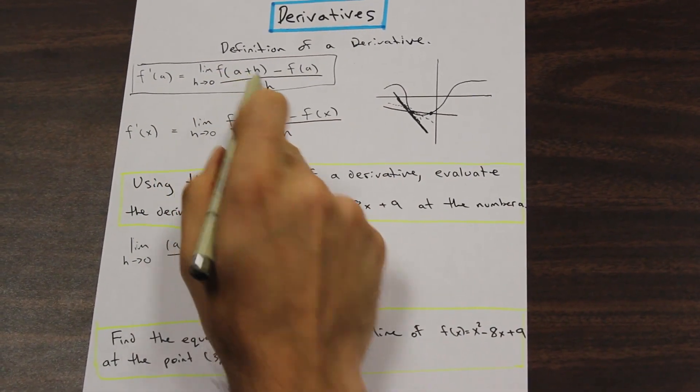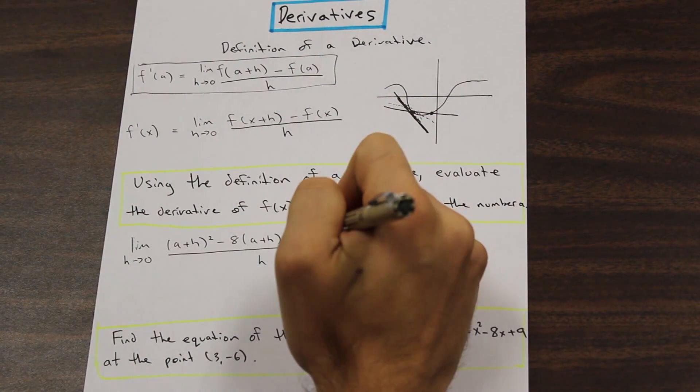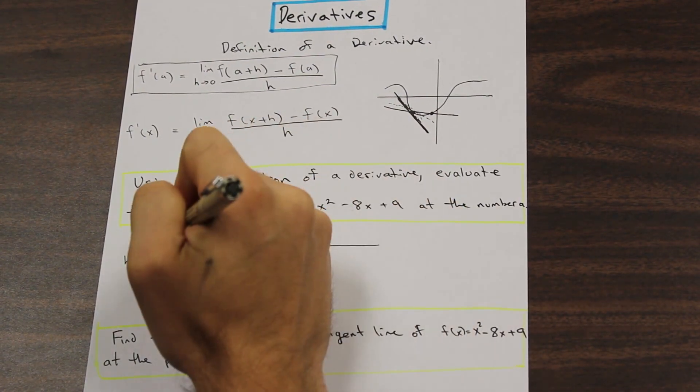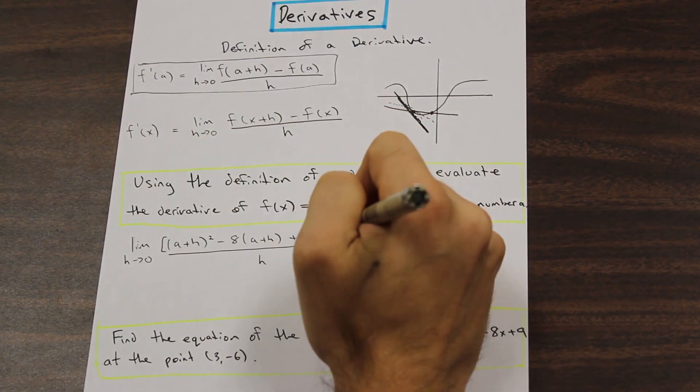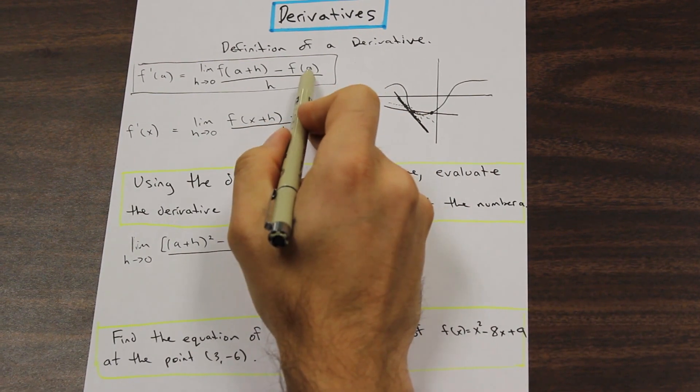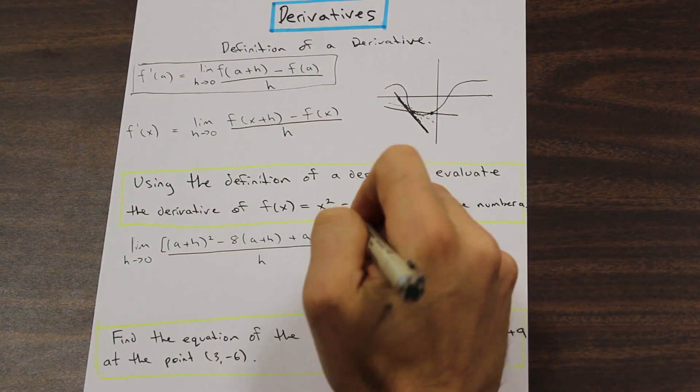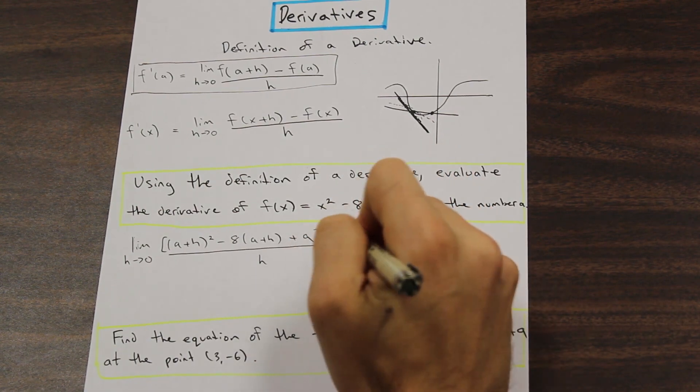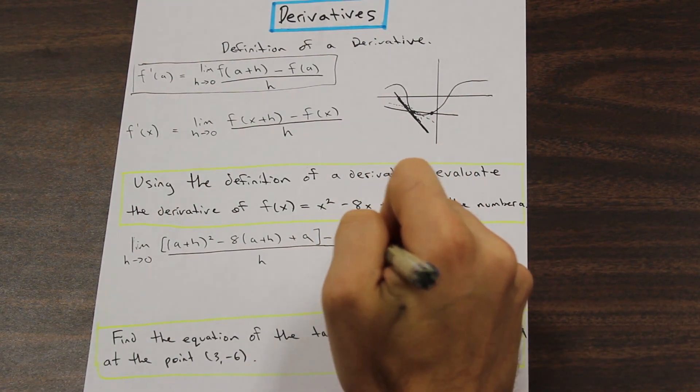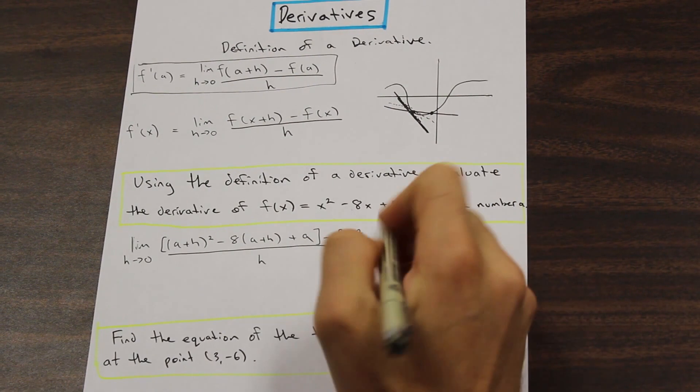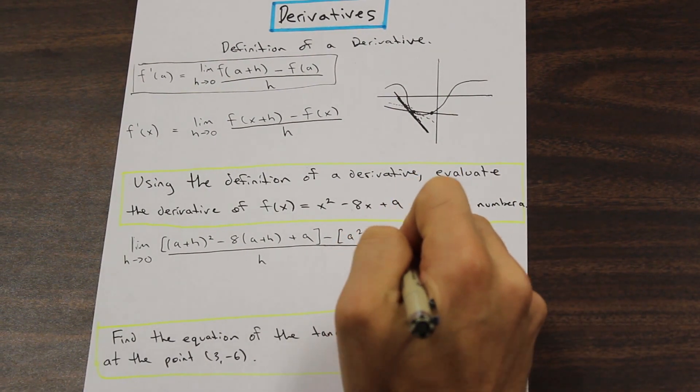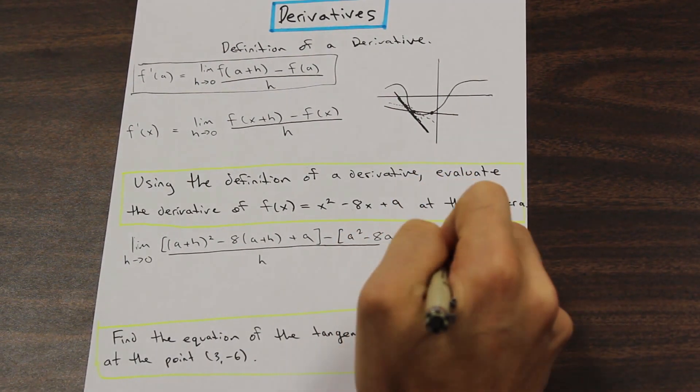For the second term here. So for the first term, we plugged in a plus h for each x. And I'm just going to put a bracket here so we can just separate the two. And for the second part, we are going to plug in a. So let's go ahead and do that. So we have a² - 8a + 9.